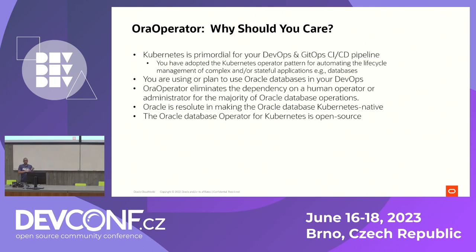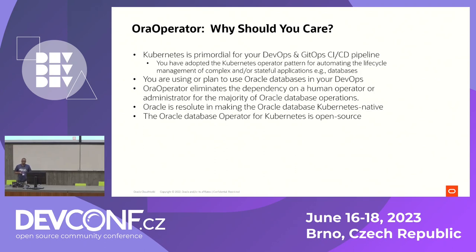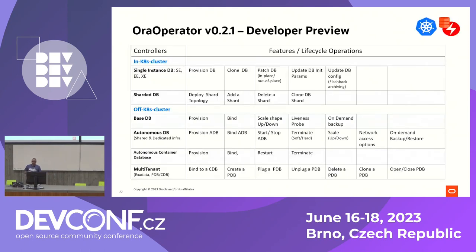Why should you care? That's what this event is about — discussing platform engineering, DevOps, Cloud Native, and programming. DevOps, GitOps, CI/CD pipelines — that's the world we're living in. Automation is essential; there's no way to reach the proper scale without embracing these things. They're not just nice-to-haves; you have to work with them.